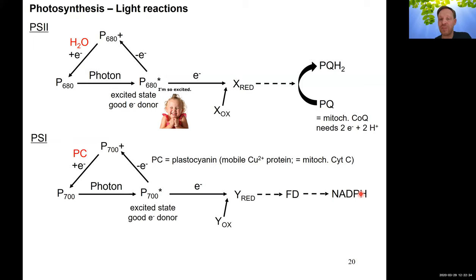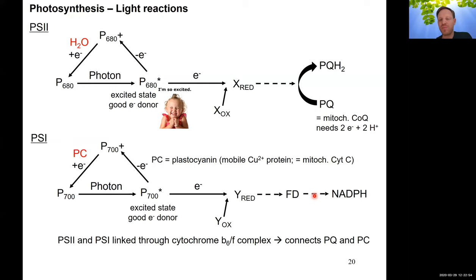PS1 is regenerated to the ground state using the reduced form of plastocyanin (PC), a mobile copper-containing one-electron carrier — equivalent in function to cytochrome C in the mitochondrial ETC. This links PS1 and PS2. The cytochrome B6F complex connects the two photosystems by taking electrons from reduced PQH2 (re-oxidizing PQ) and using those electrons to reduce PC, regenerating the reduced plastocyanin needed to recycle PS1.